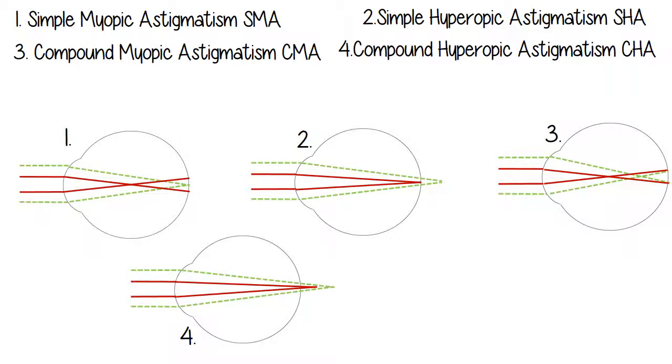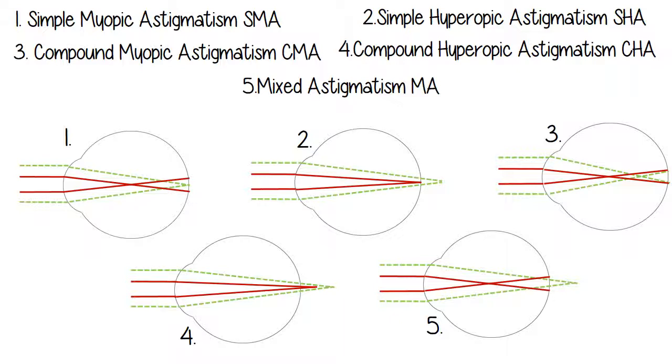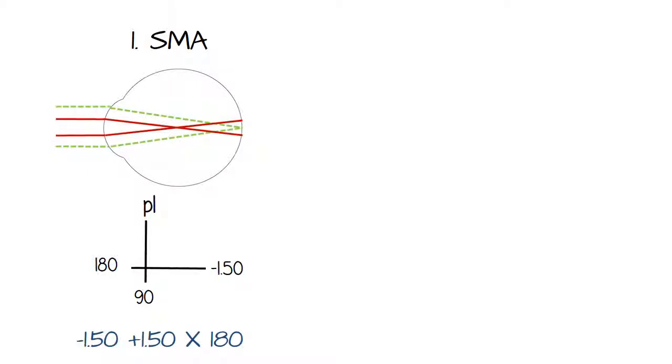Compound myopic, they both fall in front of the retina. Compound hyperopic, they're both behind the retina. And then mixed, where one's in front of the retina and one's behind the retina. Okay, why am I bringing this up?